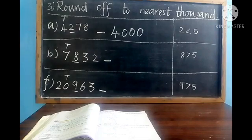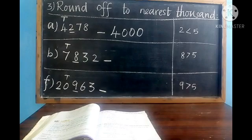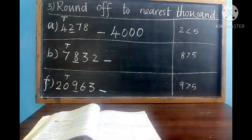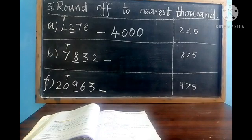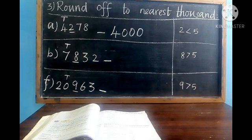Next: Round off to the nearest thousand. A division: 4278. What is in the thousands place? 4 is in the thousands place, so write T above 4. In B question, 7 is at the thousands place value, and in F question, T is at the thousands place value.